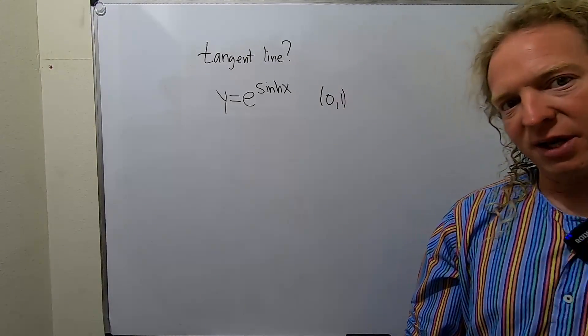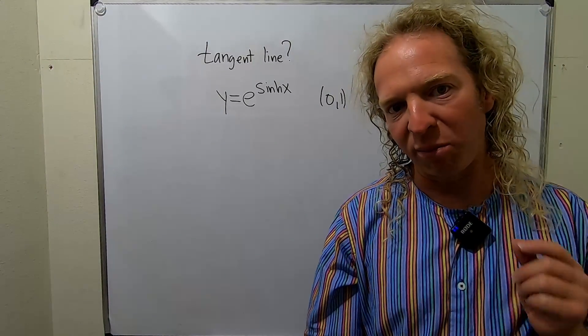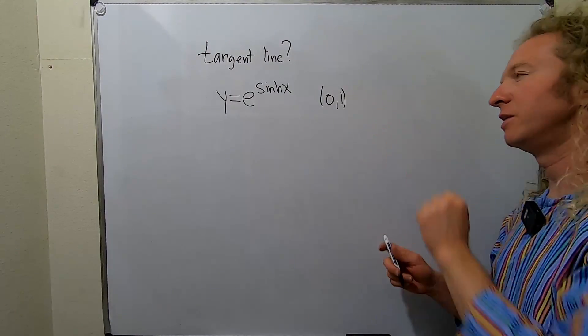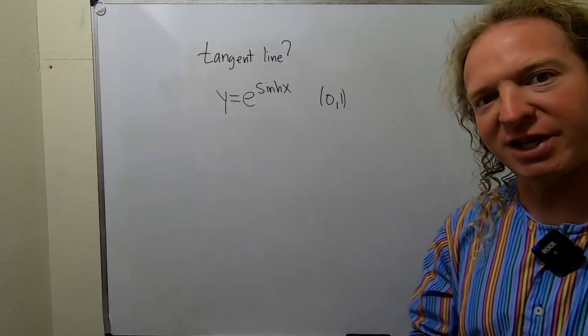So to find the equation of the tangent line, we need two things. We need a point, which is already given in this problem, and we need the slope of the tangent line.